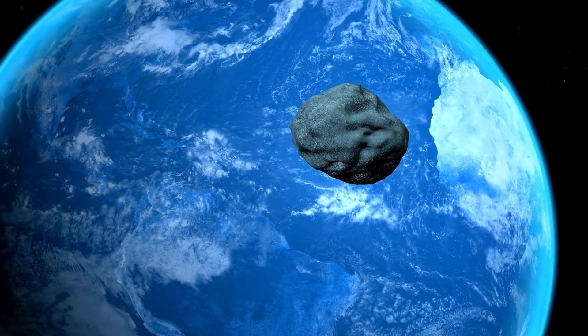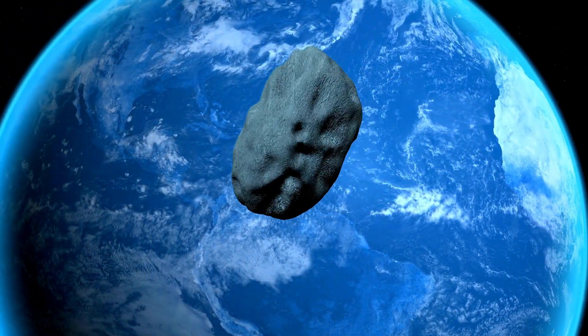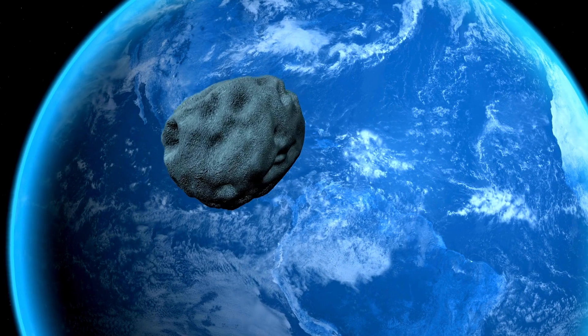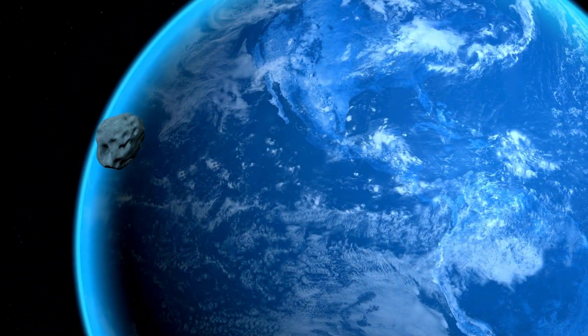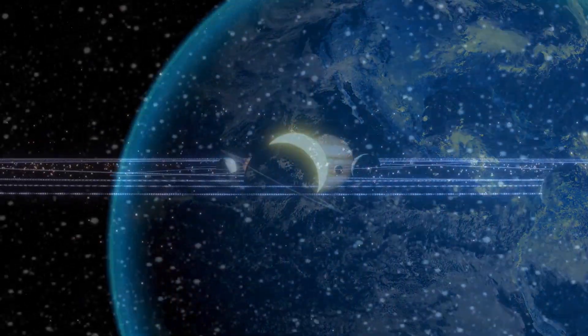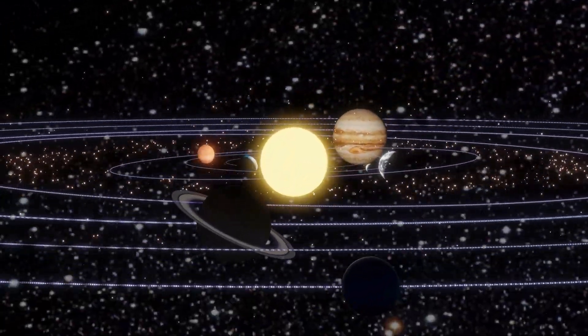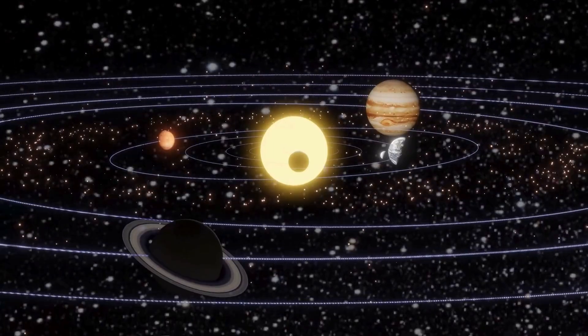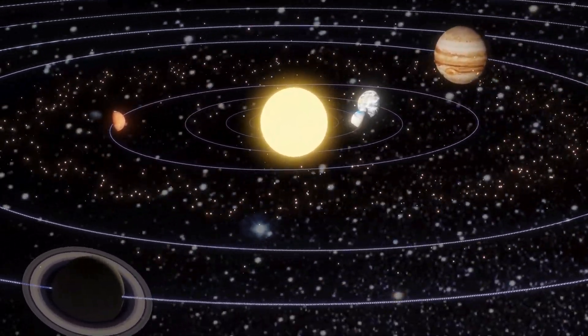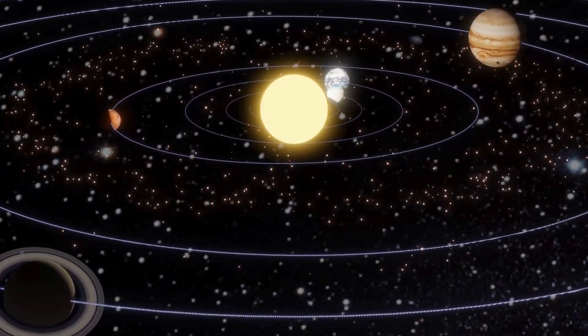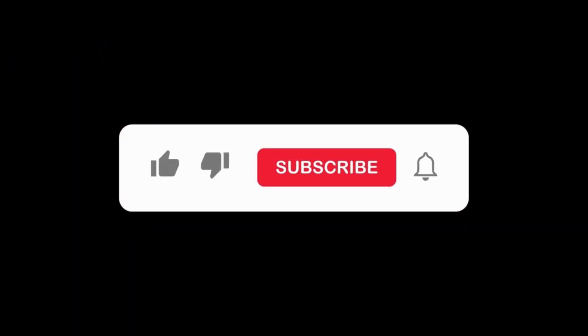Well, that just about wraps up our deep dive on Earth's temporary moon 2024 PT-5. For more on Comet A3, including when and where to see it, check out the Secrets of the Universe YouTube channel. They have a whole thing about it. And who knows, maybe soon we'll be talking about another one of Earth's cosmic dance partners. Until next time, keep looking up and keep those questions coming.